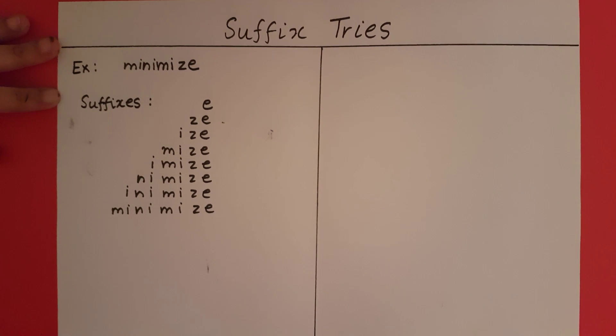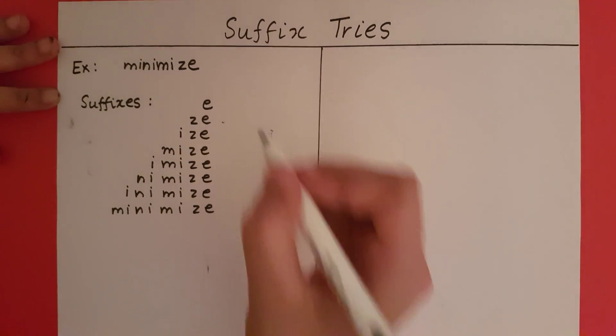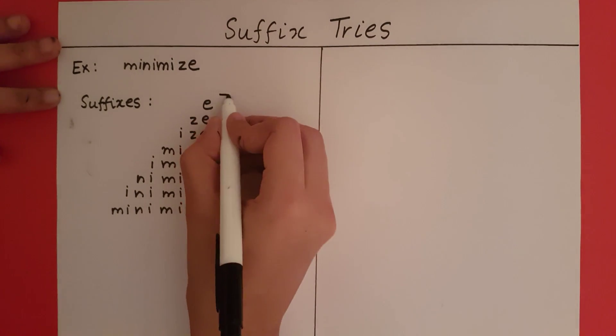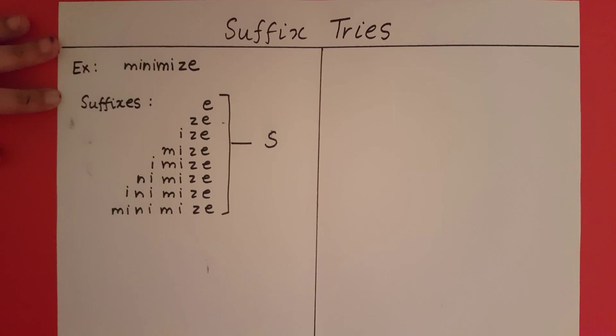These are going to be the suffixes of minimize. In the trie that we build, these are going to be the set of strings we have to include, so these are going to be part of our S.